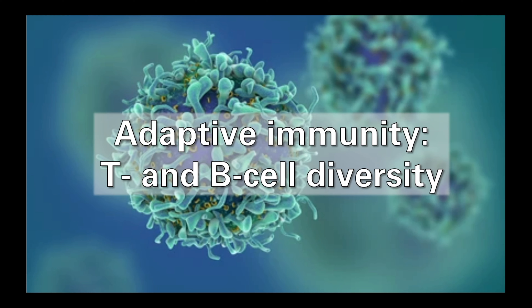The last part of the adaptive immune system we really need to discuss is how the lymphocytes are able to generate such a diverse range of T cell receptors and B cell receptors or antibodies from a limited amount of genetic material. The process underpinning this incredible feature of the immune system is the subject of this video.